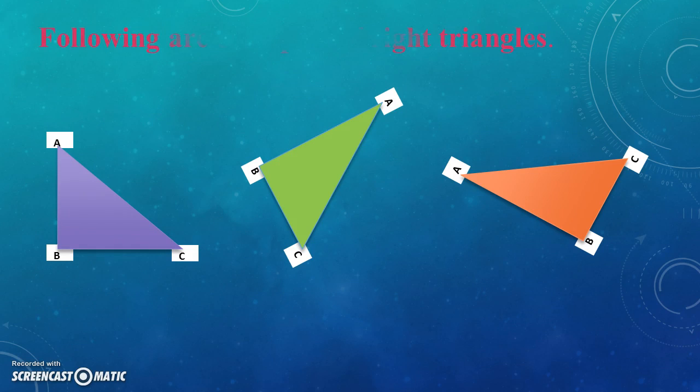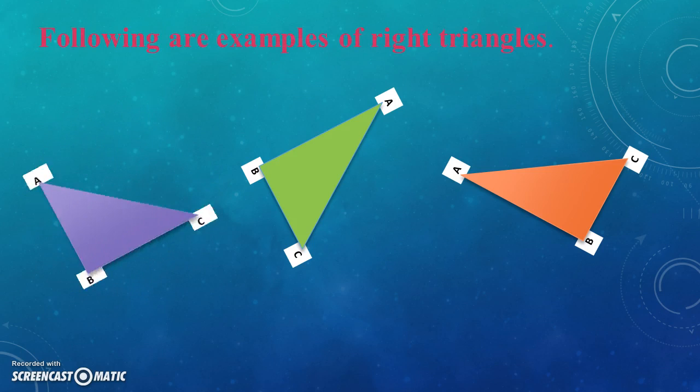All the figures on this screen are examples of right angle triangles because they have at least one right angle.